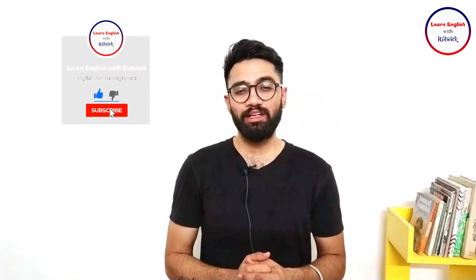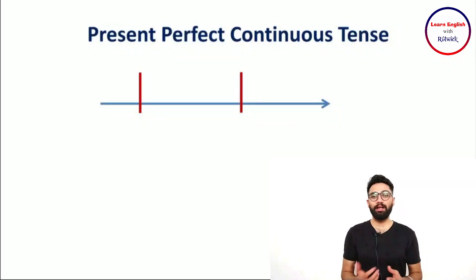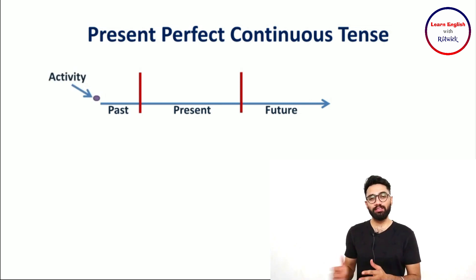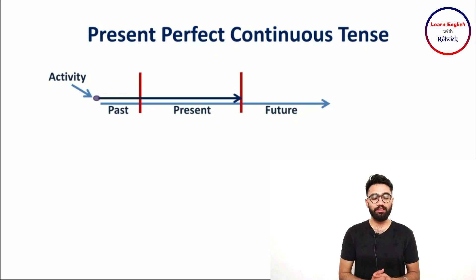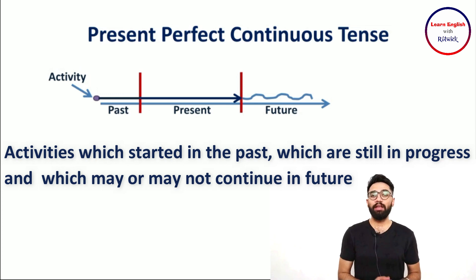The first thing is its usage. Let's try to understand it through a timeline. This timeline has three parts: past time, present time, and future time. We use present perfect continuous tense when the activity has started in the past, continued in the past, is still in progress in the present, and we may not know when it will end — it might continue in future or it might end. Those activities are mentioned through present perfect continuous tense.